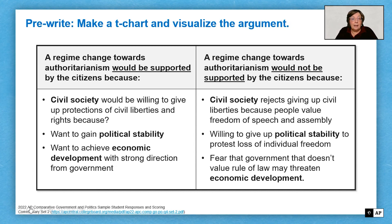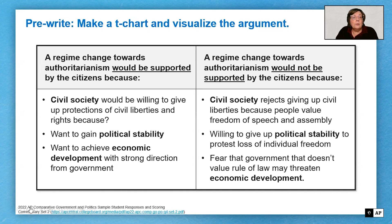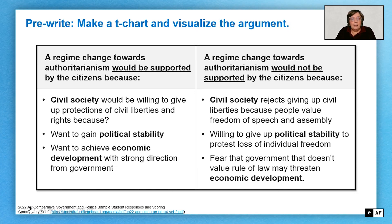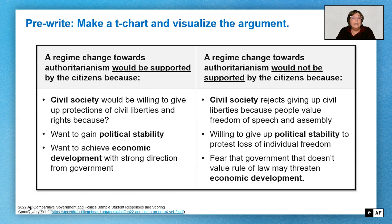It wouldn't be an argument unless there are two sides. What's important about making a claim is you can't blur the two together — you have to take a position. The best thing you can do is write out what the two sides of the argument are. For example, a regime change towards authoritarianism would be supported by citizens, and the alternative would be that it would not be supported by citizens. One is going to be your claim and the other your alternative perspective. I'm also putting the word 'because' here — to get into a line of reasoning, you need a connection word that indicates you're doing analysis.